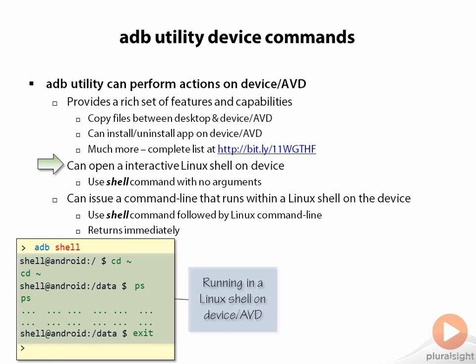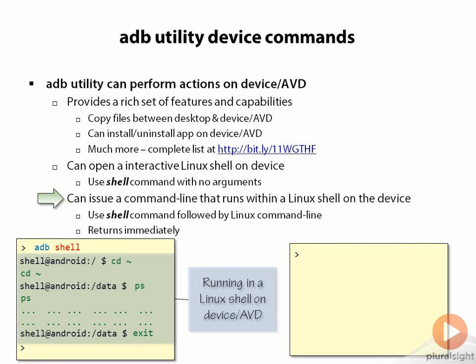Sometimes you'll want to run just an individual command on the device and get the results back. If you say ADB shell followed by arguments, those are passed to the shell on the device and run directly. For example, ADB shell PS goes out to the device, runs the PS command — which lists running processes — shows you those results, and immediately puts you back into your Windows command line. Only the results coming back were Linux. So you have the ability to be interactively in the shell, or just run a single command and get the results back.